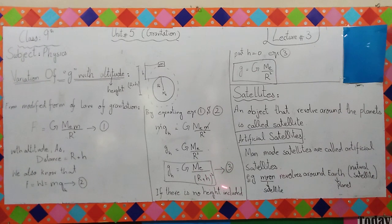If there is no height included, this equation 3 you will use when the height is included and when the distance is above the arc. Then we use equation 3. If there is no height, then put h equal to 0 in equation number 3. If we put 0, then we don't have h because there is no height. So small g is equal to capital G, M, E over r square. It will remain simple formula. So this was your variation of G with altitude.